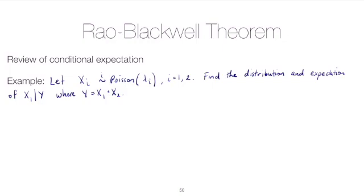Let's suppose we have two Poisson random variables x1 and x2. They're independent from one another and they have different rate parameters, so they're not identically distributed. x1 has rate parameter lambda 1, x2 rate parameter lambda 2. Our goal is to find the distribution and then the expectation of x given y, where y is just the sum of the two.